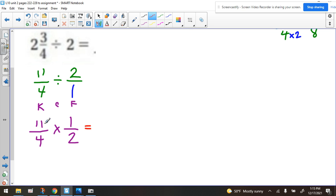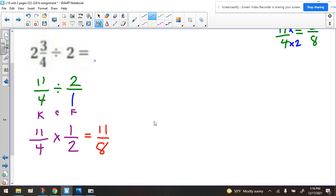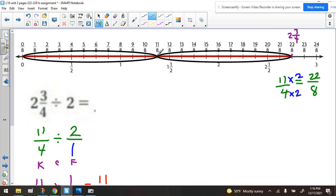So we're ready to go right across. If we do 11 times 1, we get 11. And if we do 4 times 2, we get 8. And that matches what we have right here, right? 11-eighths.